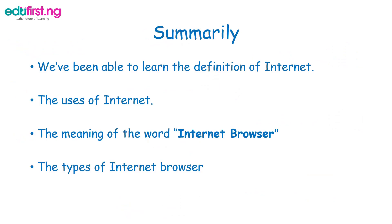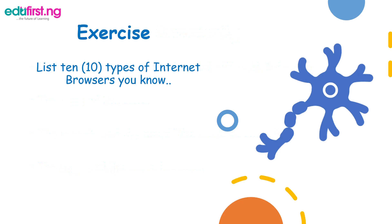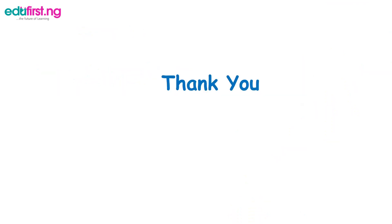So, I believe at this point we have been able to learn the definition of the Internet, understand the uses of the Internet, and also the meaning of the Internet Browser and its types. If that has been clear, then we can try this out by listing 10 types of Internet Browser that we know. Thank you for listening — until we meet again in our next lesson. Bye!